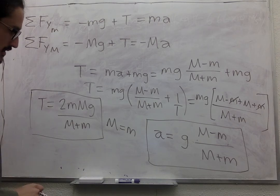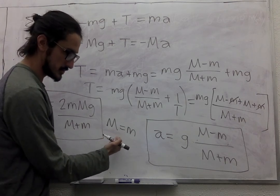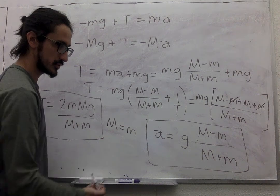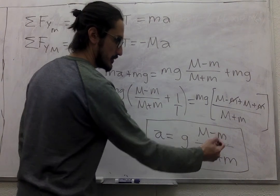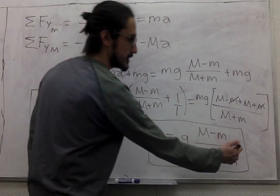Well, when big M equals small m, this is zero, so the acceleration is zero.